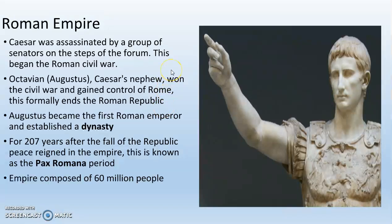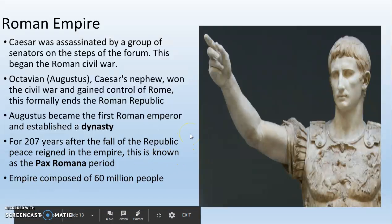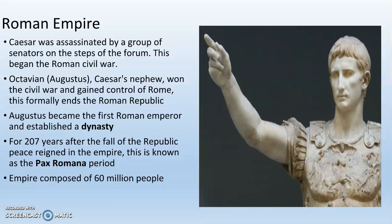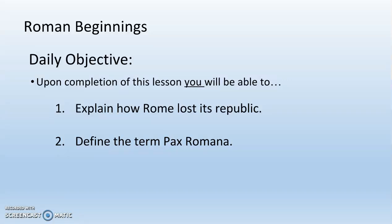Julius Caesar is assassinated by a group of senators on the steps of the Forum, and this begins the Roman Civil War. Octavian, also known as Augustus Caesar — Caesar's nephew — inherits all of Caesar's money, wealth, and armies. He eventually wins the Civil War, gains control of Rome, and formally ends the Roman Republic so the Senate no longer functions. He proclaims himself the first Roman emperor and establishes his own dynasty so his children can inherit after him. For 207 years after the fall of the Republic and the creation of the Roman Empire under the Caesars, peace reigns in the empire — this is known as the Pax Romana period. This is the height of the Roman Empire, composed of about 60 million people, a very large percentage of the entire world population at that time.